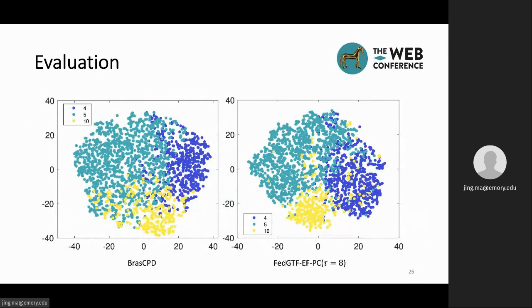We also evaluate the quality of the federated factorization factors by considering the patient subgroup identification. We use t-SNE to map the R-dimensional patient representations into the two-dimensional space and identify the patient subgroups with the top three phenotypes. This figure shows that FedGTF-EFPC has comparable performance to the centralized baseline BrasCPD in clustering the patients with the same phenotype together. This demonstrates that our methods can achieve communication compression without sacrificing the factorization quality.